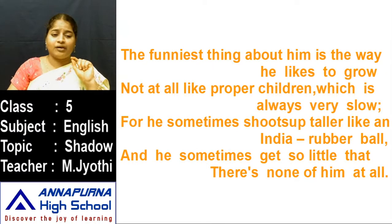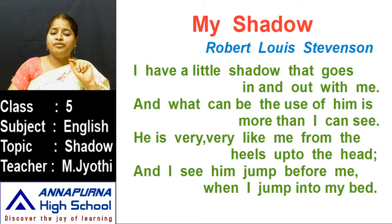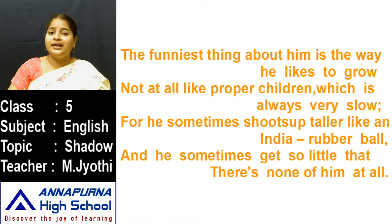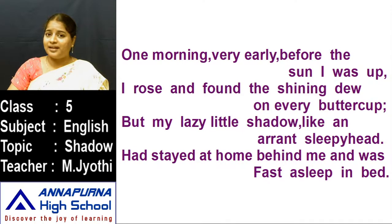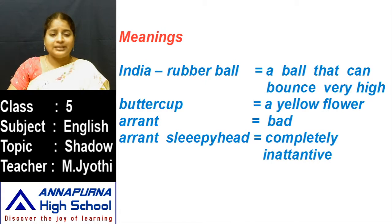I want to read the three stanzas once again and tell you the question and answers, so please write and read them. I have a little shadow that goes in and out with me, and what can be the use of him is more than I can see. He is very very like me from the heels up to the head, and I see him jump before me when I jump into my bed. The funniest thing about him is the way he likes to grow, not at all like proper children which is always very slow. For he sometimes shoots up taller like an India rubber ball, and he sometimes gets so little that there is none of him at all. One morning very early before the sun I was up, I rose and found the shining dew on every buttercup. But my lazy little shadow like an iron sleepy head had stayed at home behind me and was fast asleep in bed.